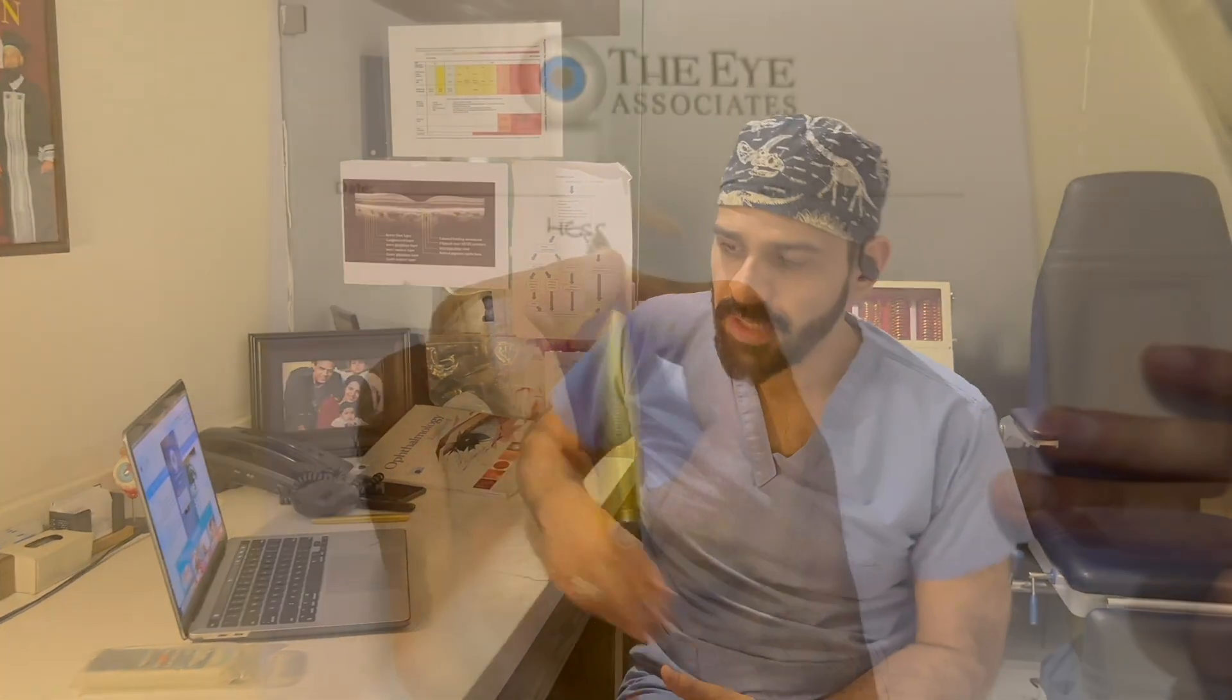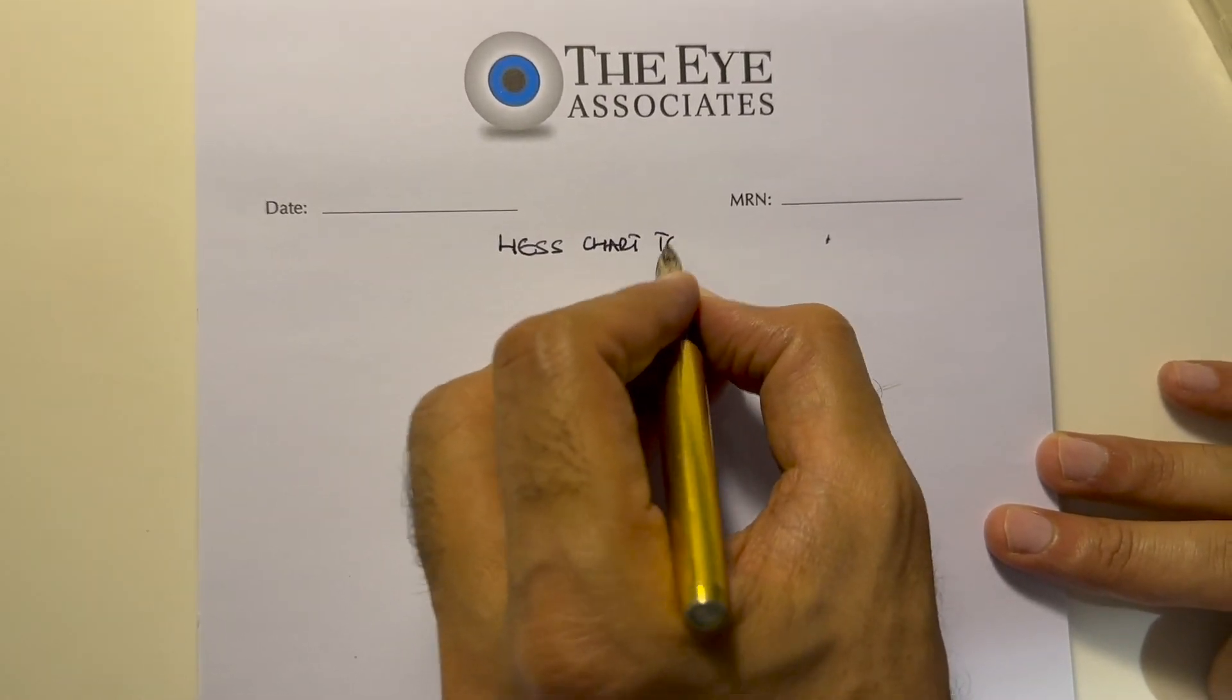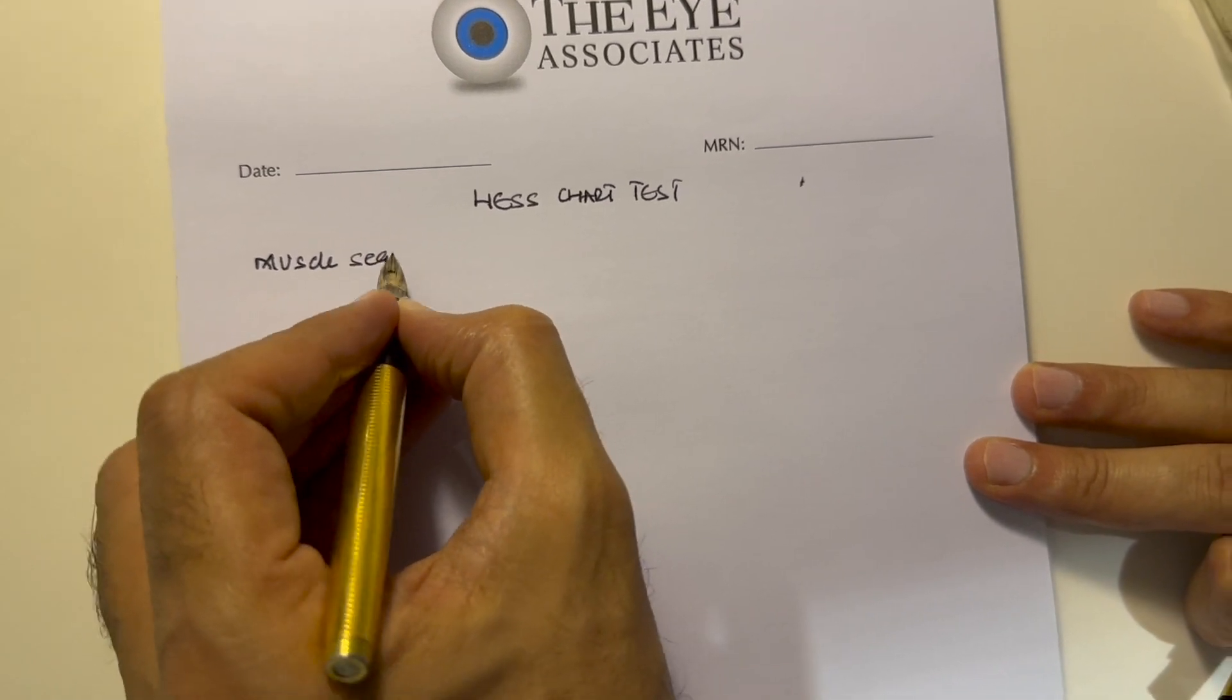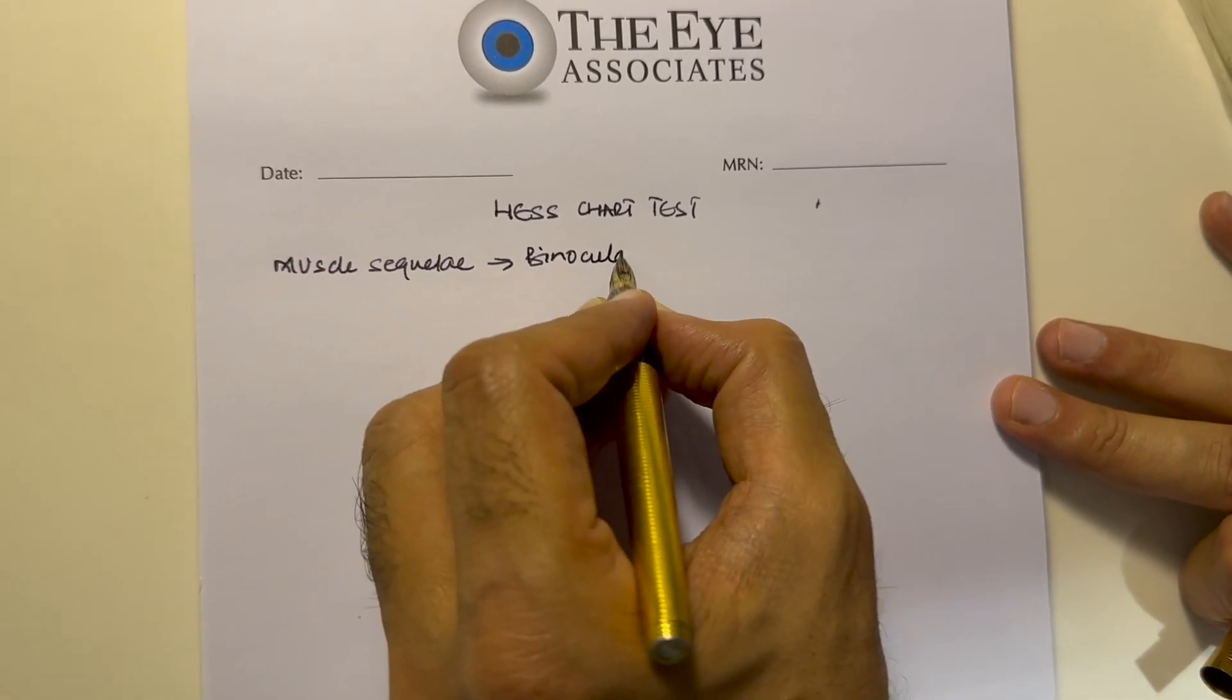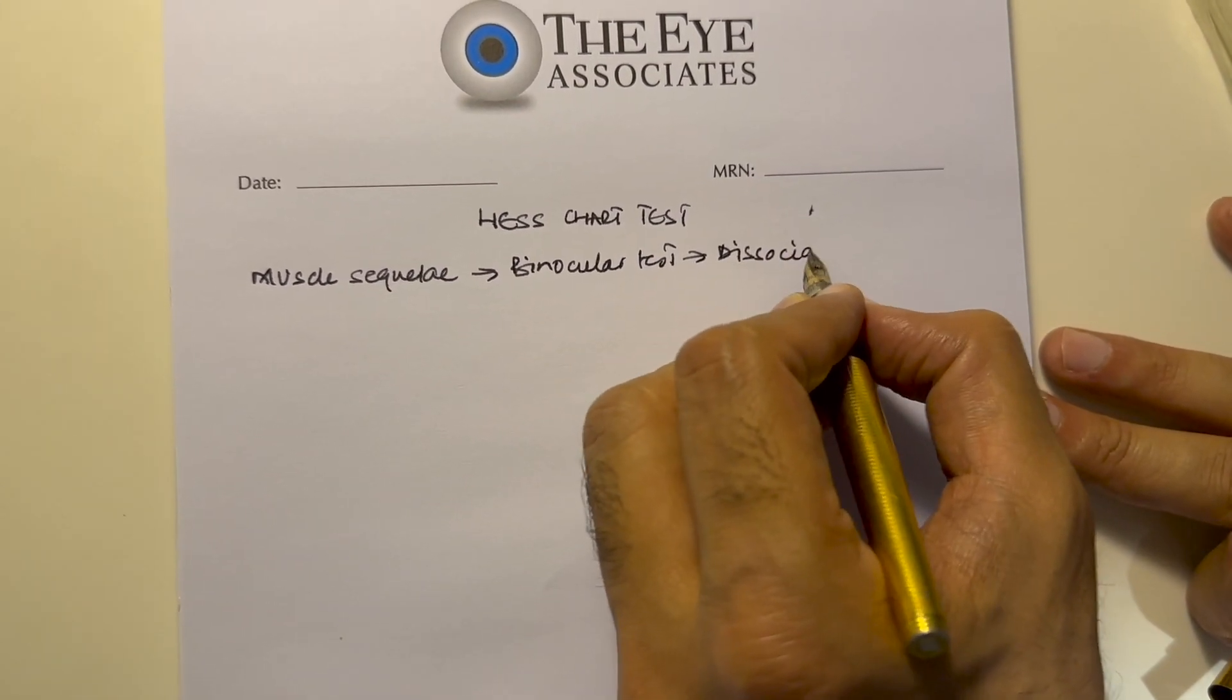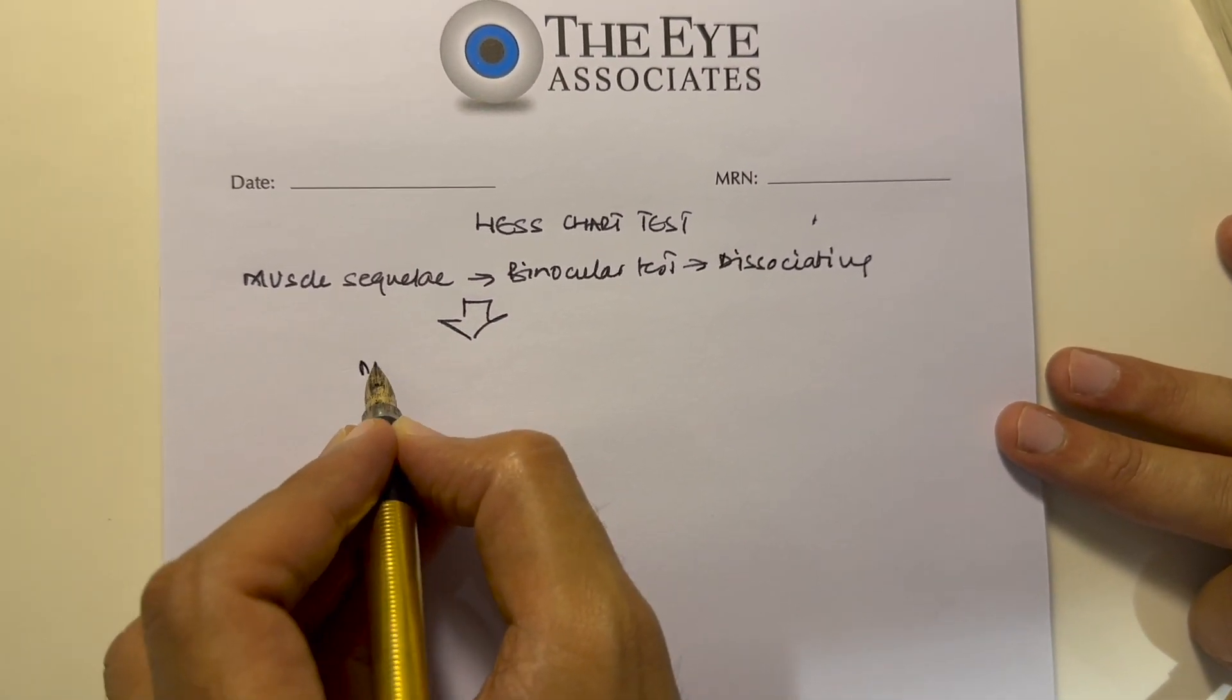This is Aliyaz and we are going to study the interpretation of a Hess chart. A Hess chart is basically used for testing of muscles equally. It's a binocular test where we are dissociating the two eyes and then plotting a chart showing extraocular muscle movements.